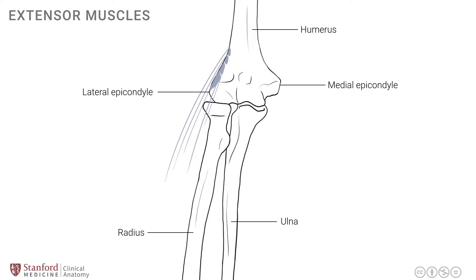This is a general attachment for most of the extensor muscles. The clinical significance of this common extensor attachment at the lateral epicondyle area is that it is often inflamed and becomes painful, a condition known as tennis elbow. It often occurs in tennis players, but not exclusively. A similar condition can be found at the common flexor attachment on the medial epicondyle, known as golfer's elbow. These conditions typically occur in sports persons but can happen in individuals because of repetitive stress injury in a variety of different activities.